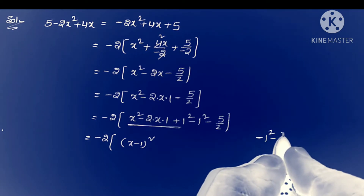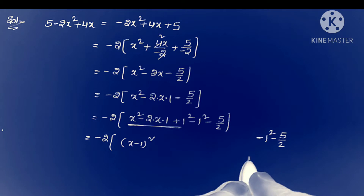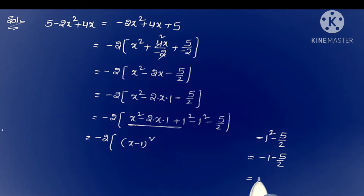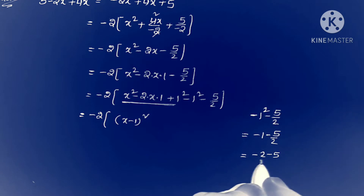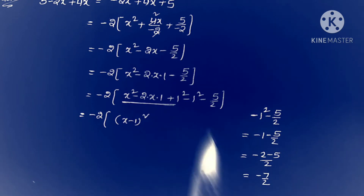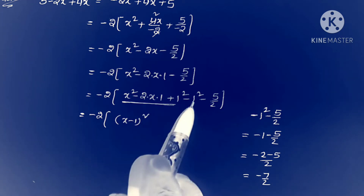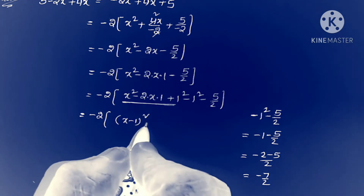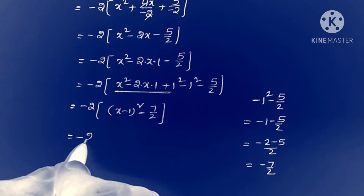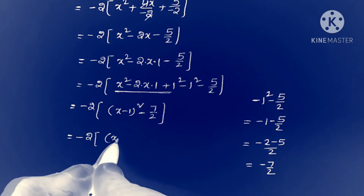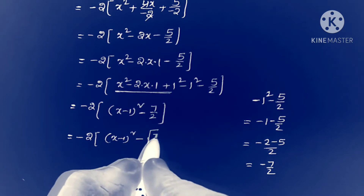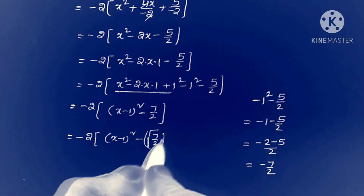Taking the simplification of the two constant terms: minus 1 squared minus 5 by 2 equals minus 1 minus 5 by 2. Taking LCM: minus 2 minus 5 by 2, that is minus 7 by 2. Substituting this value, we get minus 2 into (x minus 1) whole squared minus 7 by 2.